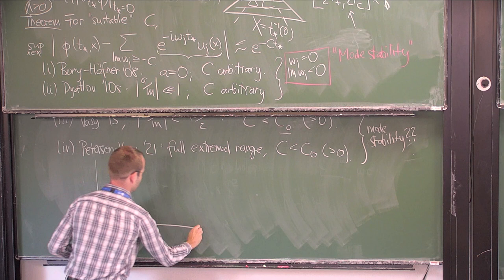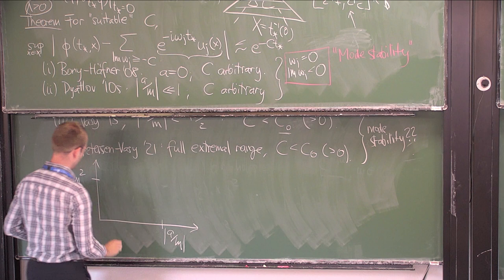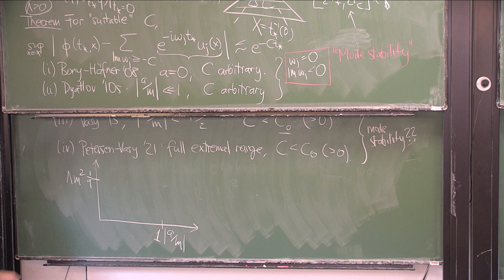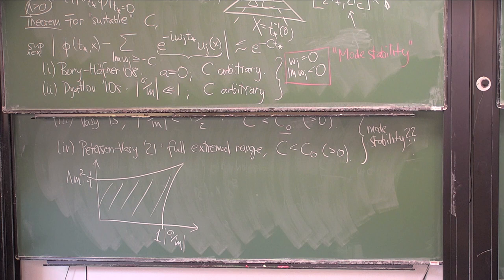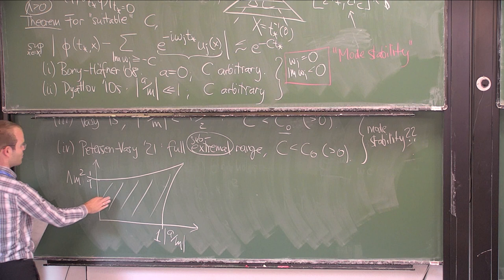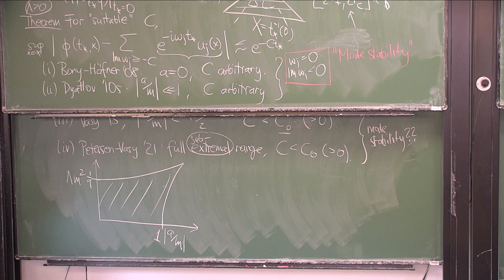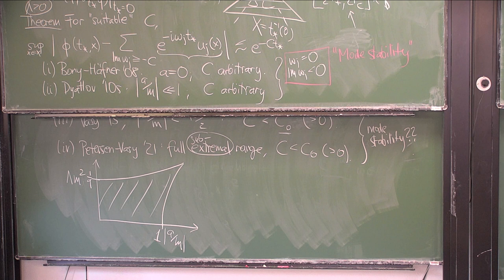What is the full sub-extremal range? There are two dimensionless quantities: λM² and A/M. The shaded region in a diagram with λM² up to one-ninth and A/M up to 1 is the so-called sub-extremal range. The reason is basically that for parameters in this range, the Kerr-de Sitter black hole has two horizons at distinct locations. The relevant function — a fourth-degree polynomial — is required to have three positive simple roots, and that happens exactly in this shaded region.